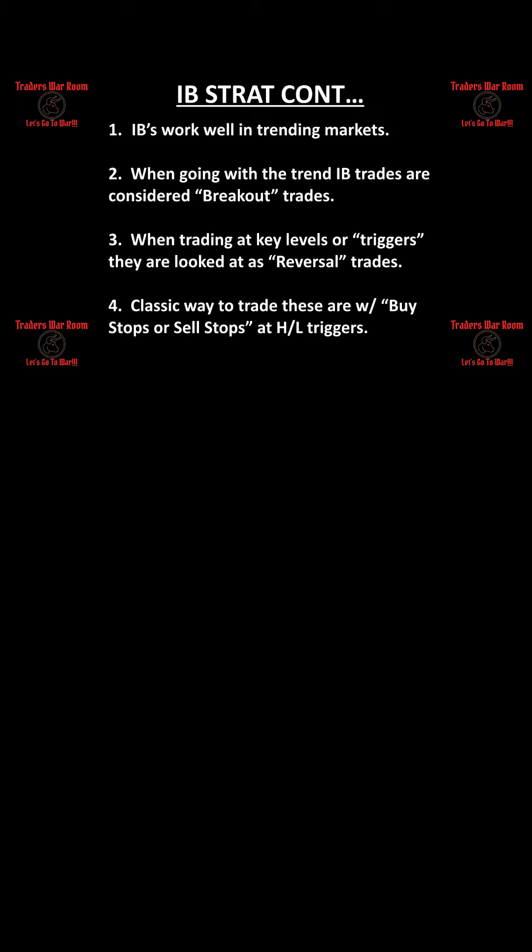When can you use the IB strategy? It works very well in trending markets — stocks moving with a lot of sentiment, either negative or positive. These are trending IB trades known as breakouts or price action reversals. When you take these trades you're looking for key levels or triggers: reversals either up or down, or breakouts above or below consolidation areas. A classic way to trade these is using buy stops and sell stops at the high and low trigger points.